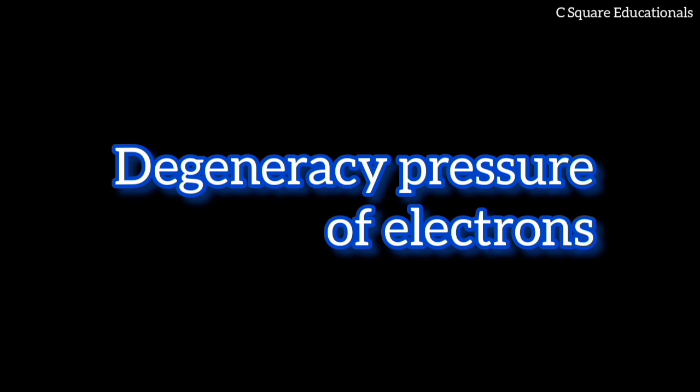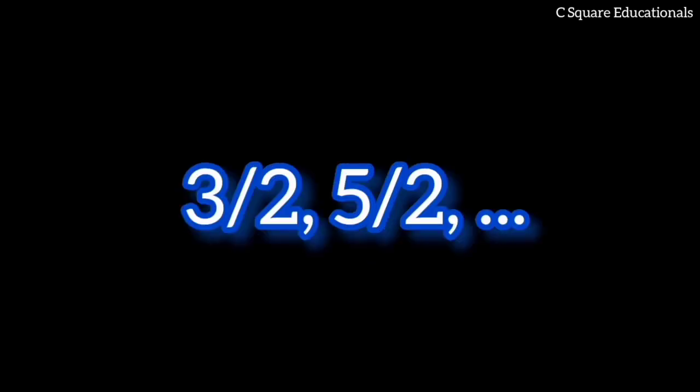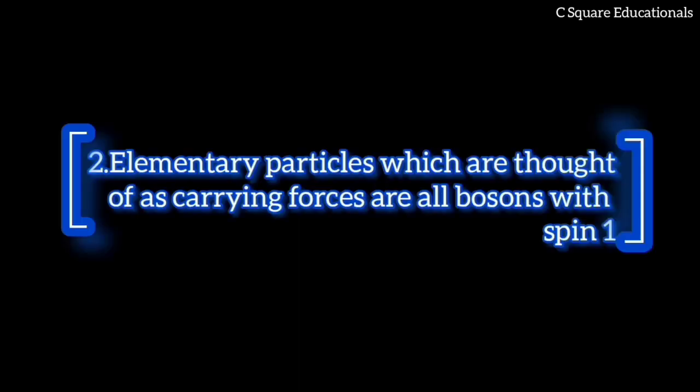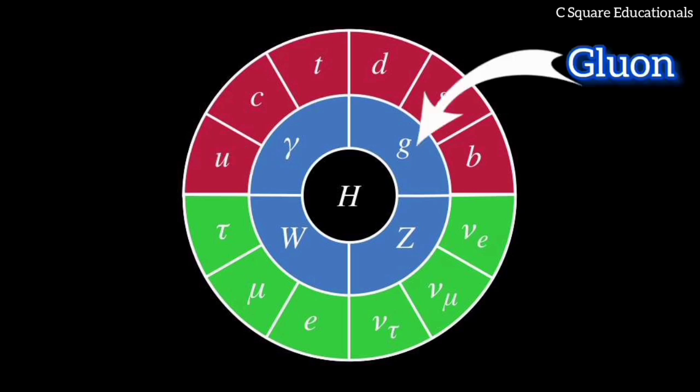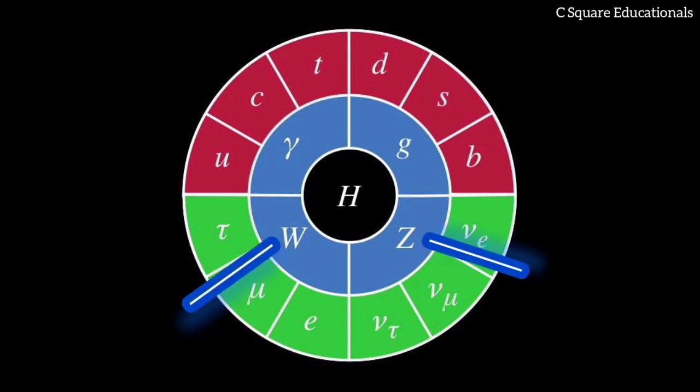Elemental fermions with other spins, 3/2, 5/2, etc., are not known to exist. Two: elemental particles which are thought of as carrying forces are all bosons with spin 1. They include the photon, which carries the electromagnetic force; the gluon, which carries the strong force; and the W and Z bosons, which carry the weak force.